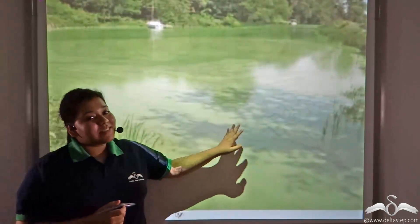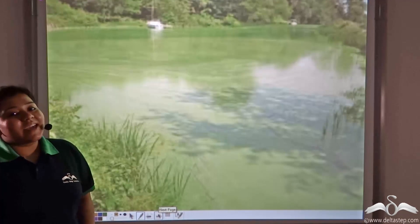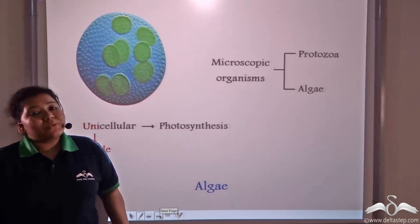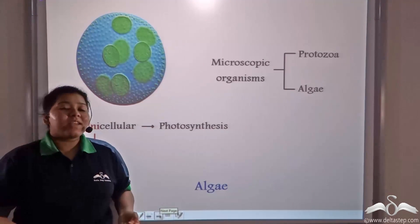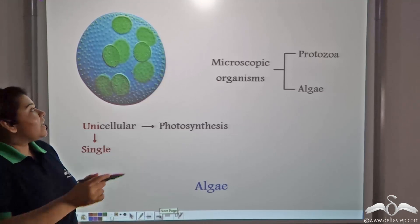Now, you might have seen ponds like these which have a greenish dust-like layer on top. Well, even these are unicellular microorganisms, but unlike protozoa, they stay in clusters.